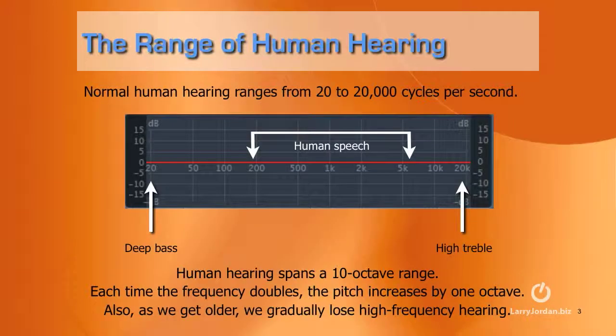Whenever we talk audio, it all starts with the range of human hearing. Normal human hearing ranges from 20 to 20,000 cycles per second. 20 cycles per second, which is always graphed on the left, is such a deep tone that it sounds more like a vibration than a pitch. And 20,000 cycles, which is always graphed on the right, is such a high tone that it sounds more like wind through the pine trees than an actual tone.